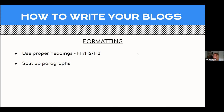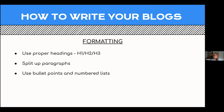Use bullet points and numbered lists — they break up large blocks of text and make your post scannable. It's like when you search for a recipe online: some blog recipe posts give you their entire life story before getting to the recipe. I naturally scroll through and my eyes scan looking for bullet points or numbered lists, because I know that's where the recipe is going to be. My eyes scan until I hit the bullets or numbered list — and that's it. Same principle applies to your blog posts.